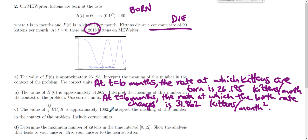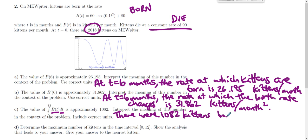Then there's an integral: we took a rate in kittens per month and integrated over months, giving a number of kittens. There were 1082 kittens born during the first 12 months of the year.